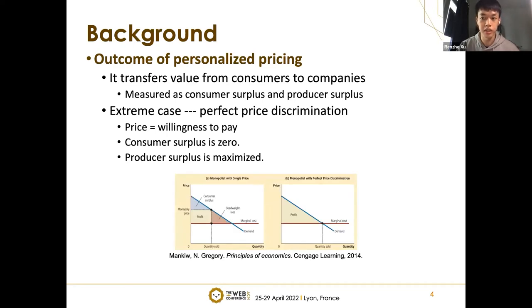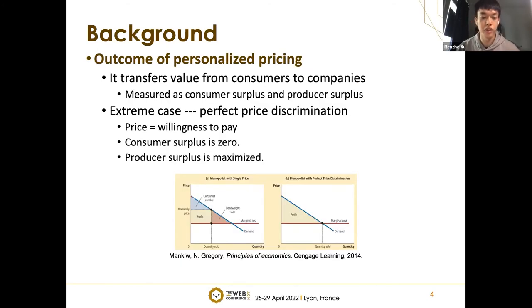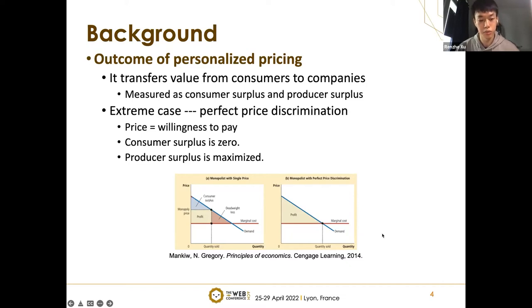A graphical explanation is shown in this figure. Both subfigures consider the setting when a monopoly sells a single product to different consumers. The left subfigure represents the case with uniform pricing — the same price for each consumer. Here, the yellow rectangle represents the producer's surplus and the blue triangle represents the consumer's surplus. However, when the monopoly adopts perfect price discrimination, as shown in the right figure, the profit is maximized and the blue triangle disappears, meaning the consumer surplus becomes zero.